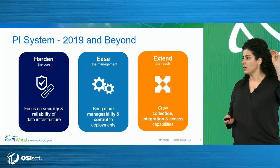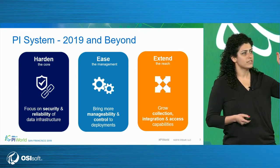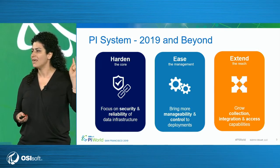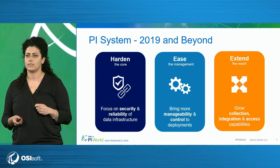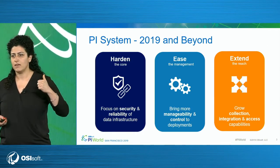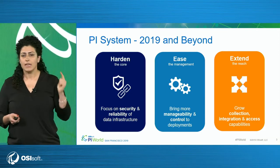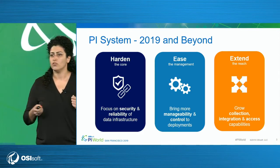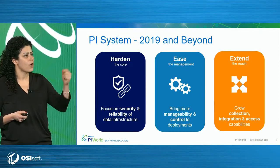These are the three pillars of our software development when it comes to Pi system. The first one is hardening the core of the Pi system, where we focus on security and reliability — the two aspects that are non-negotiable for your critical operations. The second one is easing the management and giving you more control over the deployments of your Pi system. And the third is extending the reach and expanding the value of your data, collecting data, giving all users access no matter where they are, and integrating with whatever other systems you need. That third bucket is where the innovation happens.